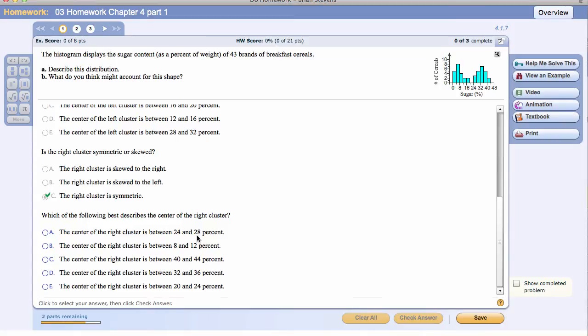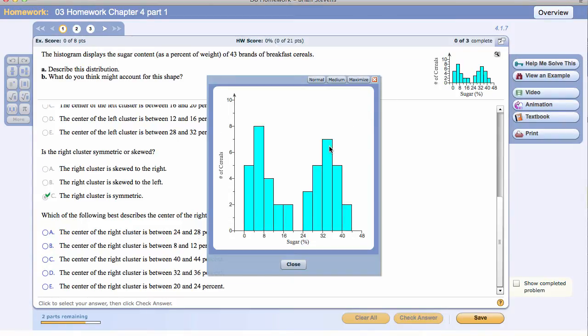Which of the following best describes the center of the right cluster? We will zoom in again and see that the center is contained between 32 to 36. Although 36 is not labeled right here, 36 is the end of this bin.